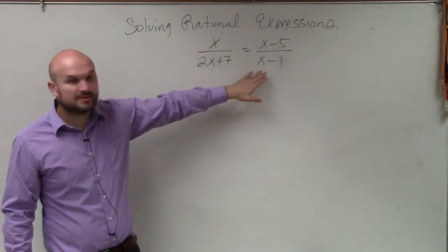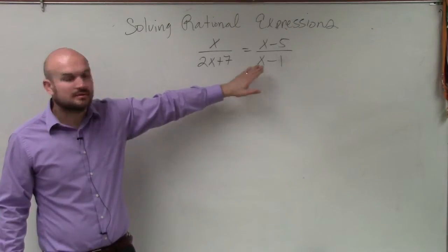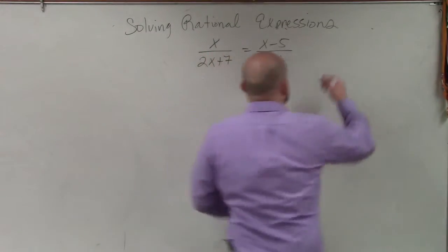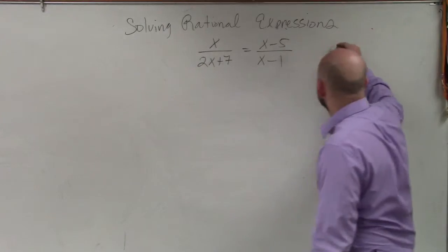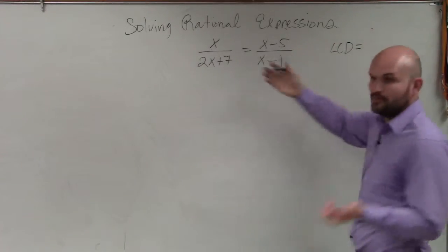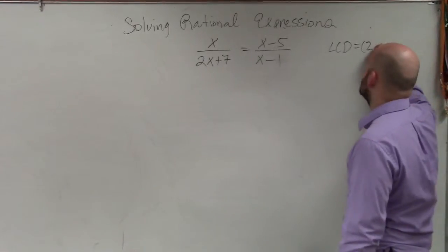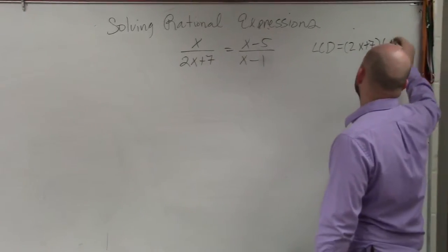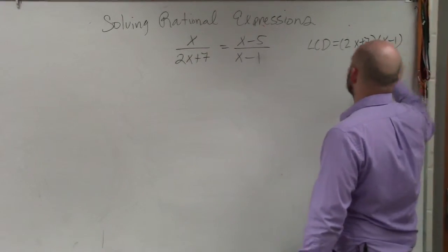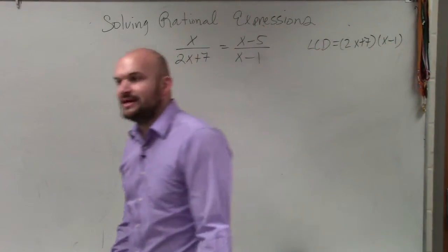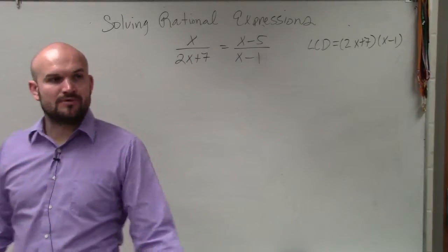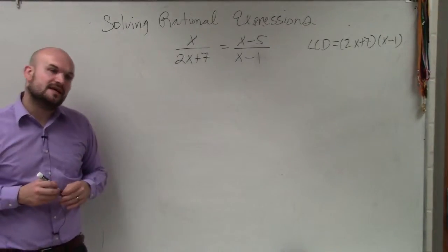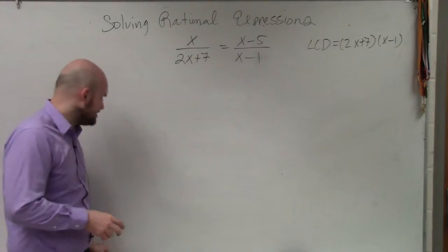So as we're going over this, you need to again determine the LCD with polynomials — it's really not that difficult. We can basically just take the product of our two denominators that we already have. Now, to eliminate, all we're simply going to do is multiply our LCD on both sides of our equation.